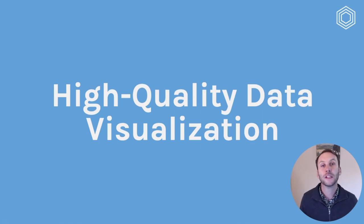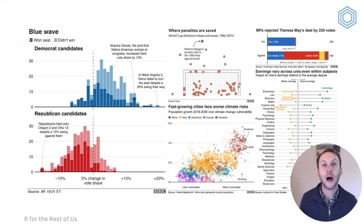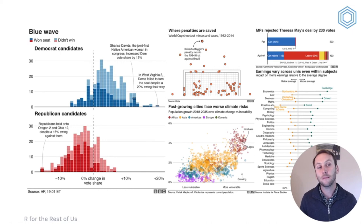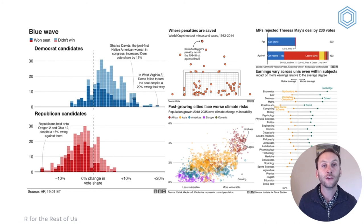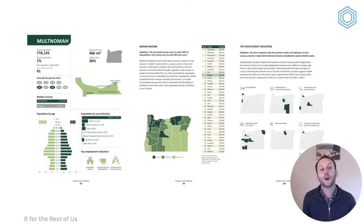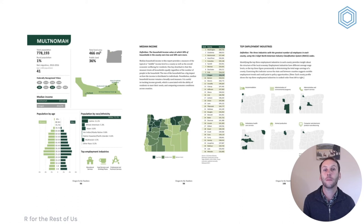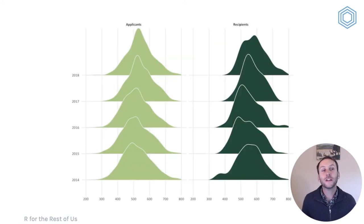R is also powerful because of high quality data visualization. It's used by journalists around the world. This is actually several examples of data visualization produced by the BBC in R using the ggplot package. They have actually open sourced this package to enable you to make visualizations in the style of the BBC. You can see it's super wide-ranging in terms of what you're able to make. Here's an example of some data visualization that I made for a report in Oregon, looking at key social and economic indicators throughout the state.